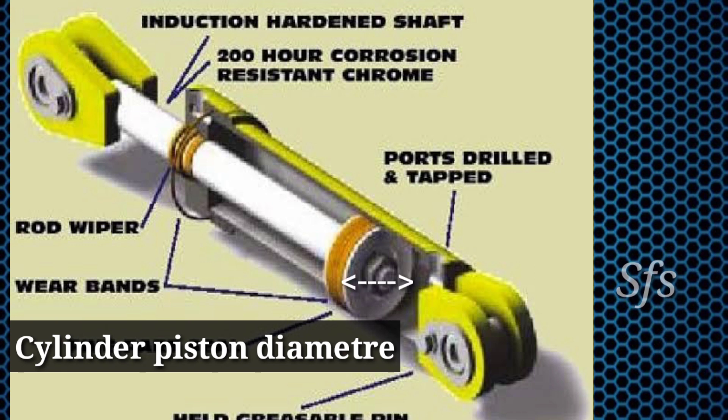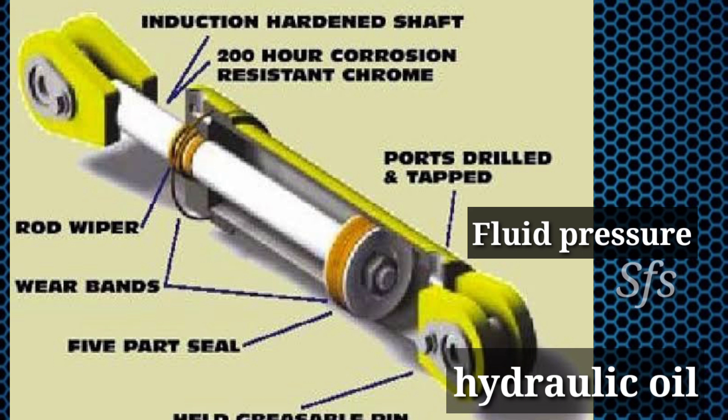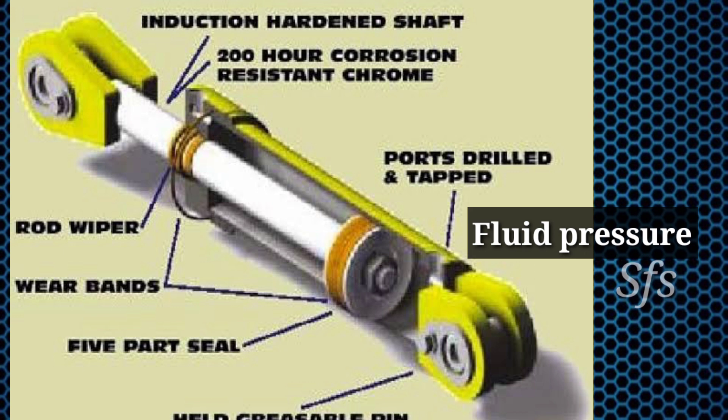To calculate force developed by any hydraulic cylinder, we require two things. First is cylinder diameter, with which we calculate the piston area, and second is fluid pressure. In hydraulic cylinders, hydraulic oil is used. For force calculation, we require the pressure of that fluid, and we can easily get the pressure from the pump.